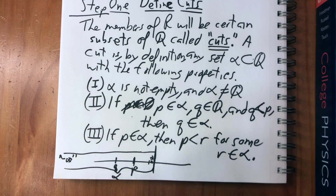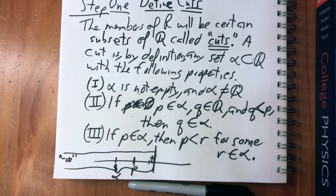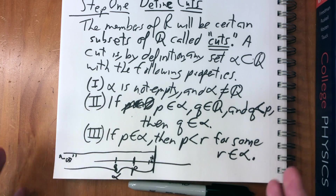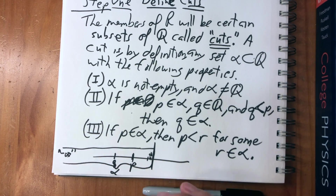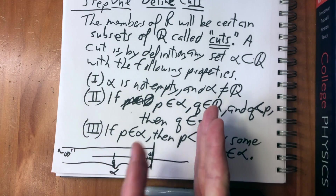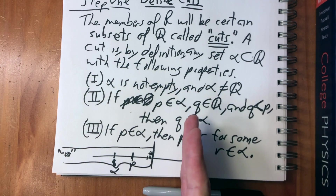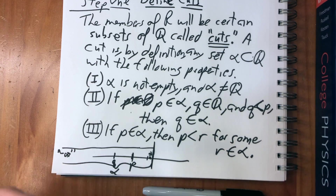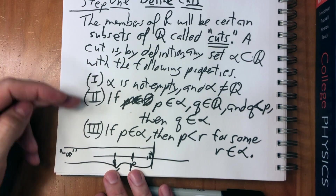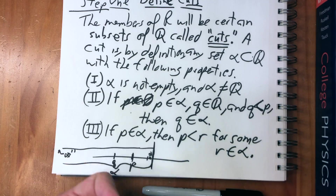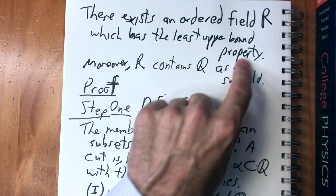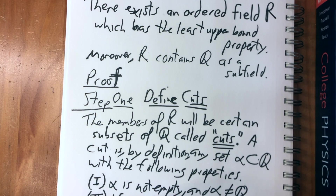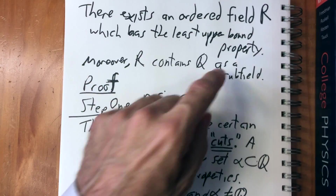The important thing to remember is we're not describing one specific set — we're defining a class of subsets of the rational numbers. There are infinitely many such subsets; every set of the form 'everything less than some number' is a cut. Each one of these cuts can be seen as a real number — we'll be able to define those objects as elements of the field R and prove it's an ordered field with the least upper bound property.